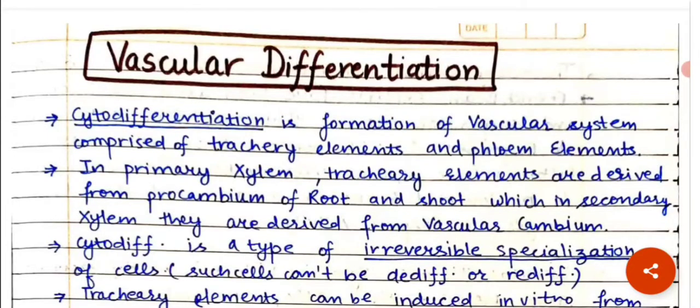Hello everyone, we are going to discuss vascular differentiation. Vascular differentiation is also called cytodifferentiation. Cytodifferentiation is formation of vascular system comprised of the tracheid elements and the phloem elements, means xylem and phloem elements.